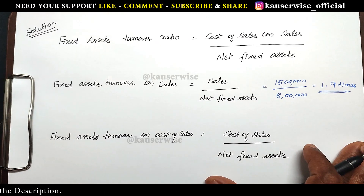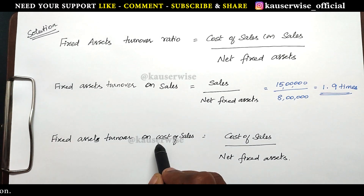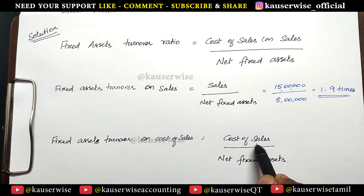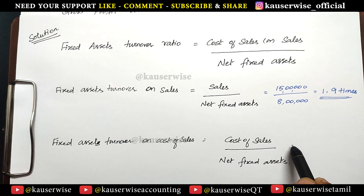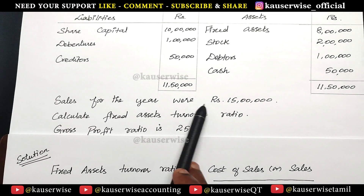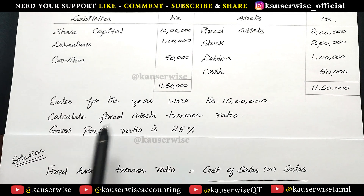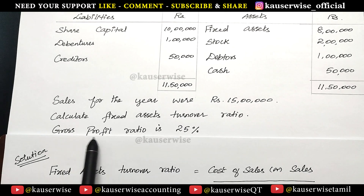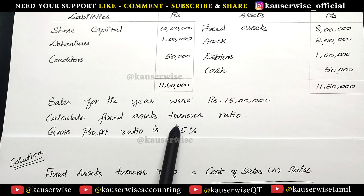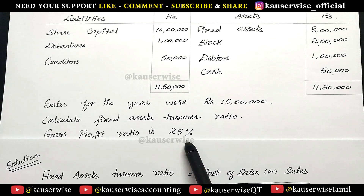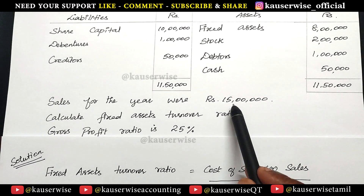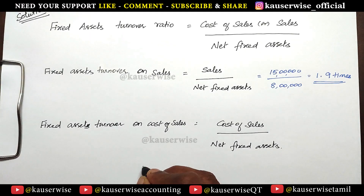Now we are going to calculate the same thing on cost of sales. The formula for cost of sales is sales minus profit. Sales for the year were 15 lakhs and gross profit ratio is 25%, so 25% on sales is profit. Subtract profit from sales to get cost of sales.